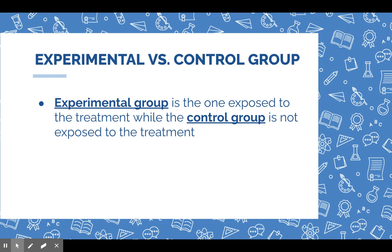In experiments we have two different groups. The experimental group is the one being exposed to the treatment — the one where you're changing behavior. For example, if you're testing a new medication for anxiety, the experimental group is the one that gets the new drug you're testing, and you want to see if they are less anxious because of it. The control group is the one not exposed to the treatment. You either don't give them the treatment at all, or you give them a placebo — which we'll talk about in a moment. They are not getting the actual treatment.